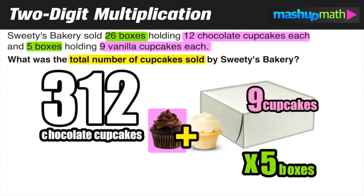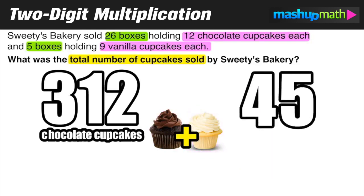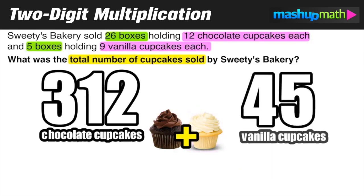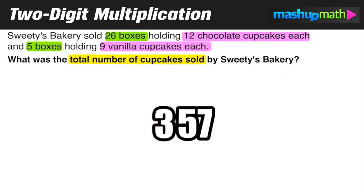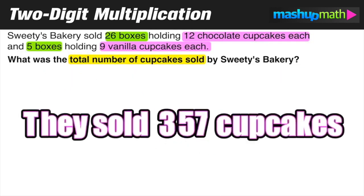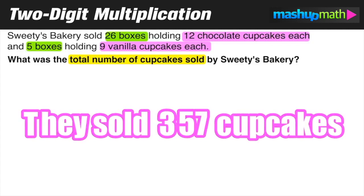Now for vanilla cupcakes: nine cupcakes per box times five boxes, so nine times five equals 45 — the total number of vanilla cupcakes sold. To find the grand total, we add 312 and 45, giving us 357, the total number of cupcakes sold by Sweetie's bakery.